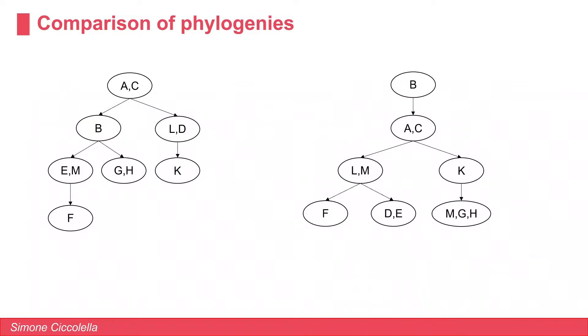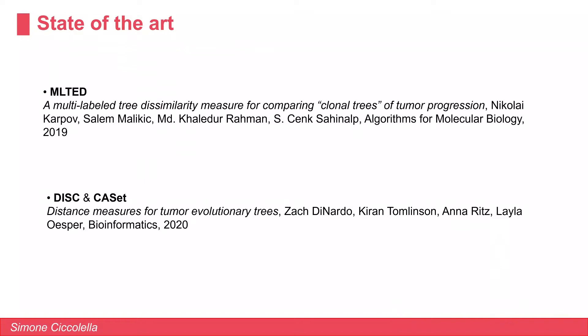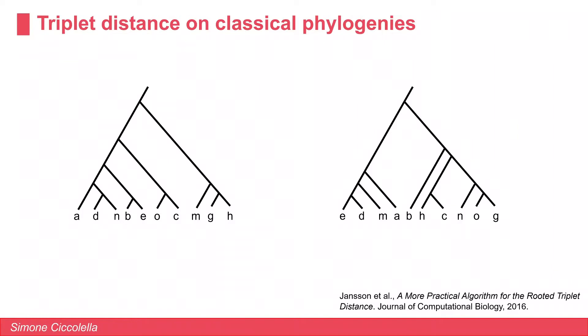In particular, we are interested in this type of phylogeny called the fully multi-labeled trees with potentially polyoccurring labels, because this is what current cancer progression inference methods are producing. There exist a few measures for this topic: the MLTED from 2019 and the DISC and CASETTE from 2020. Our measure is based on the classical triplet distance.